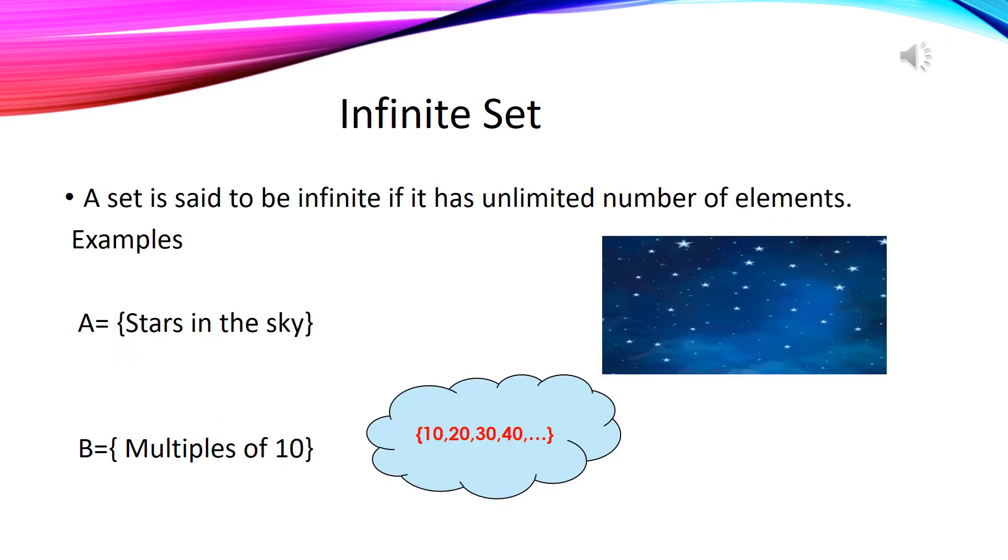A set having an unlimited number of elements is called an infinite set. For example, a set of stars in the sky as it is not an easy task to count the stars. Similarly, if we have a set of multiples of 10 it would be 10, 20, 30, 40 and so on. These two sets are infinite sets because both have an unlimited number of elements.